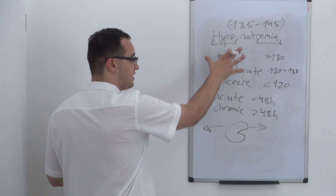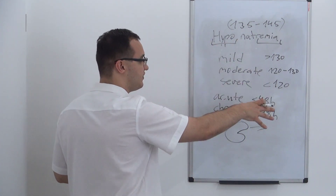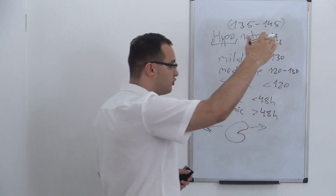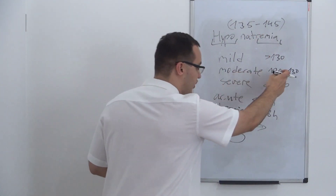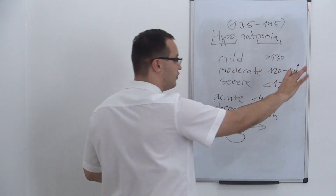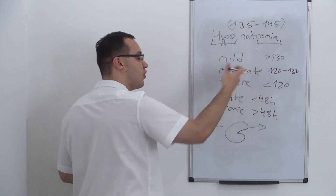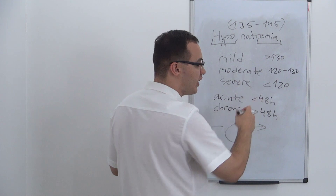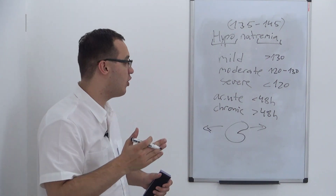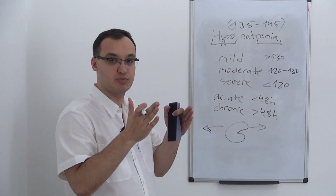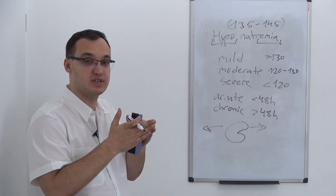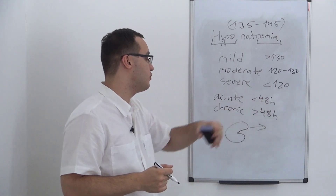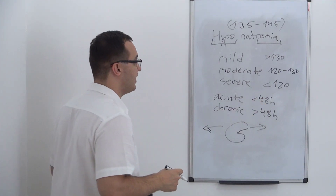So remember: mild is when you have more than 130, moderate when you have 120 to 130, severe when you have less than 120. Acute is when you have less than 48 hours of this lower sodium level, and chronic is when you have more than 48 hours.